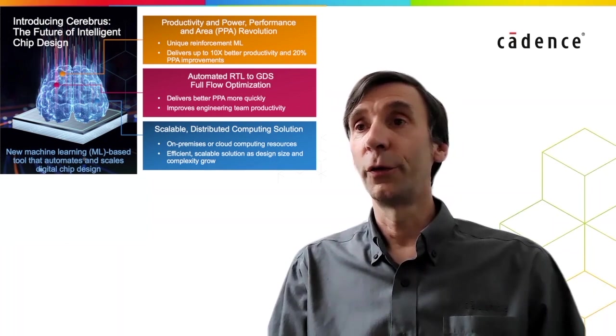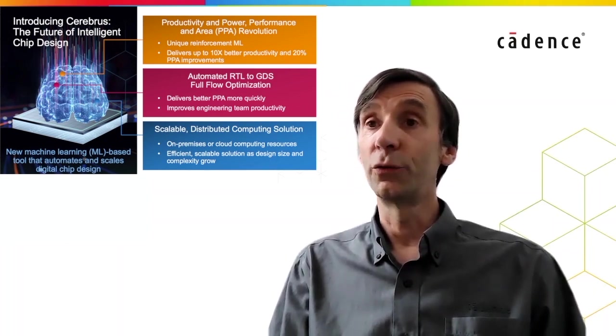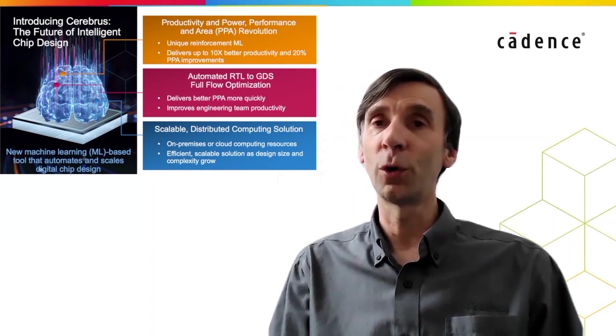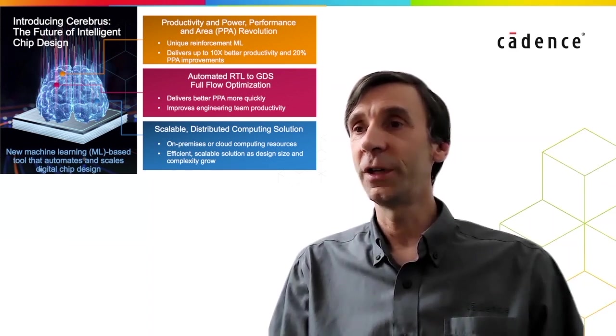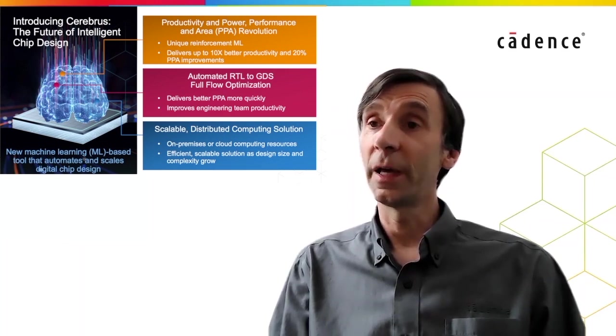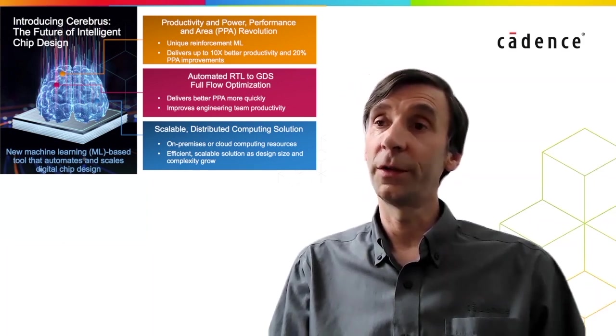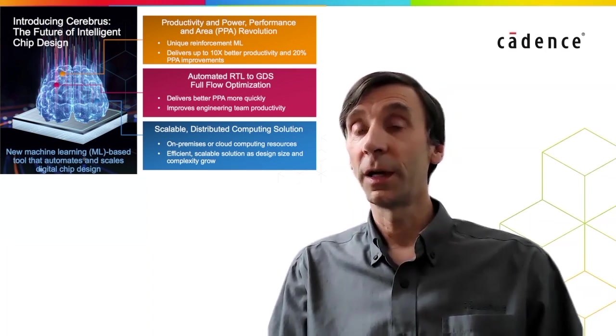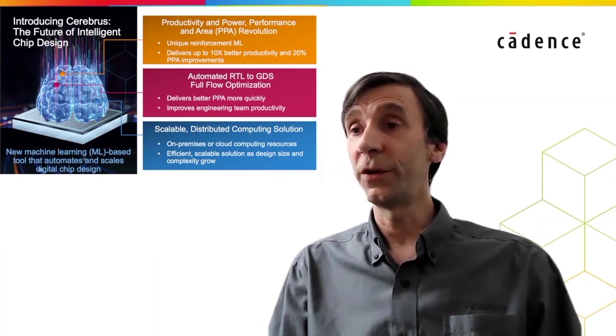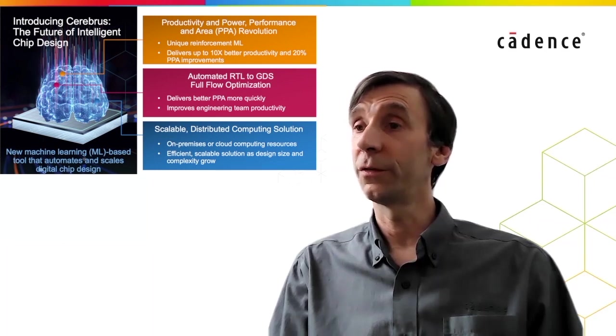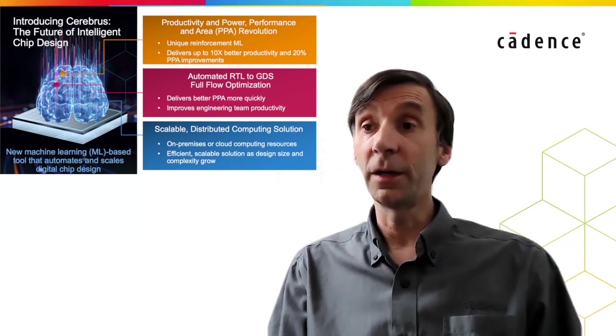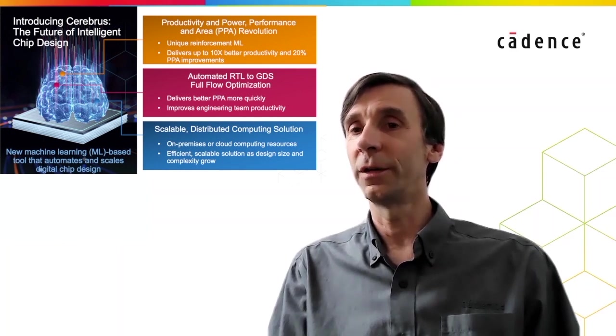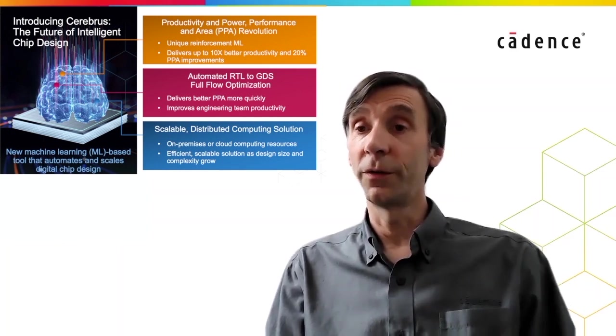So to conclude, Cerebrus is the next revolution in chip design. Using a unique reinforcement machine learning engine developed by Cadence, Cerebrus delivers better design, power, performance, and area results more quickly. Cerebrus provides completely automated, machine learning driven, full flow optimization technology, which enables better engineering team productivity, so more system on chip designs can be implemented concurrently. And Cerebrus uses the latest scalable and distributed computing technology, either on-premises or cloud computing resources, to enable efficient and scalable chip design for the ever-increasing size and complexity of today's products. As I mentioned earlier, if you'd like to understand more about how Cerebrus reinforcement learning flow optimization works, please take a moment to view the Cerebrus R&D video. Cerebrus is truly the future of intelligent chip design. Many thanks for your time and interest watching this video.